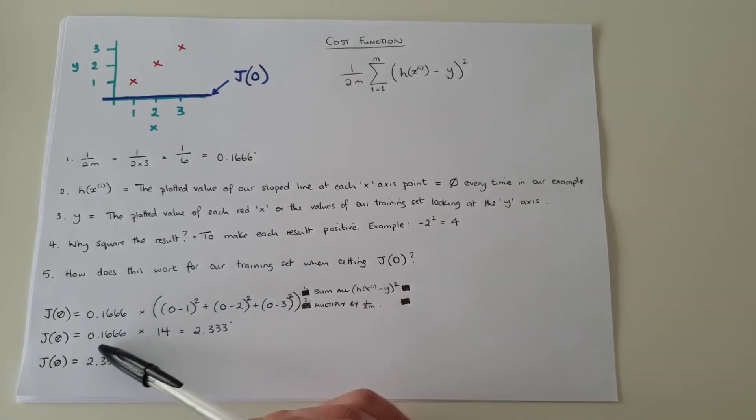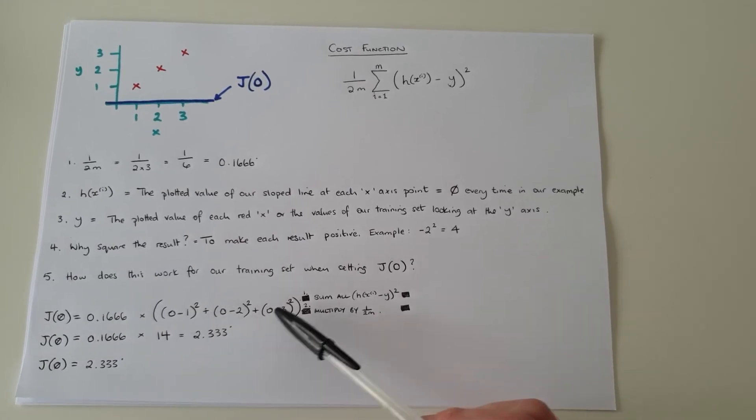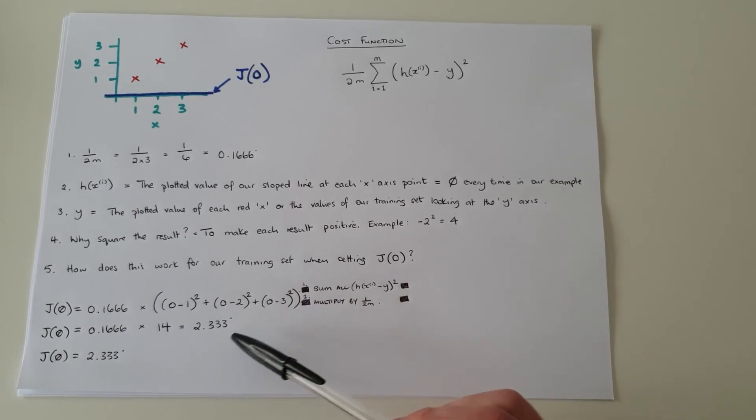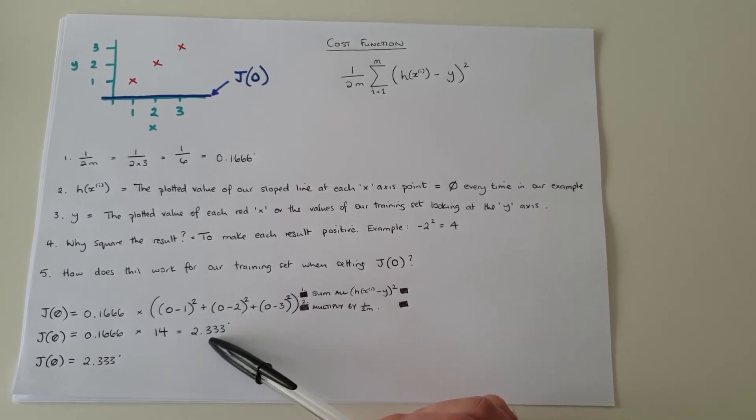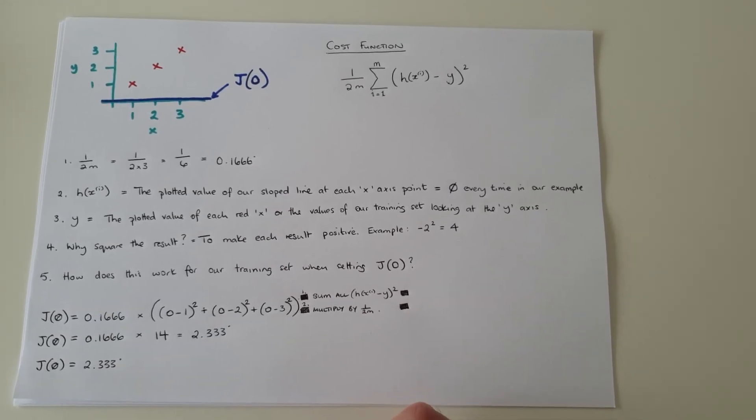So if we substitute that out, it's 0.1666 times 14, because it's one plus four plus nine. And that gives us 2.33. So j of zero equals 2.33.